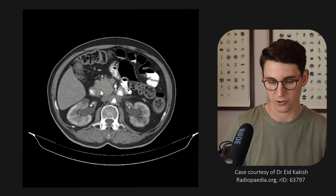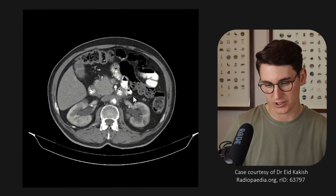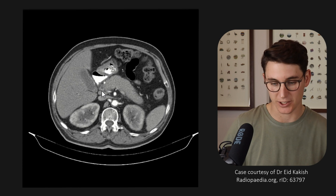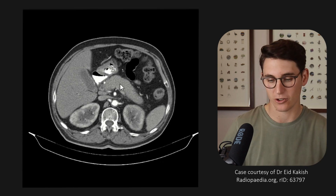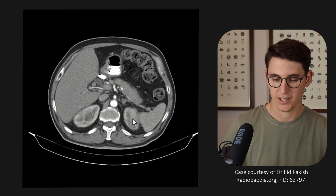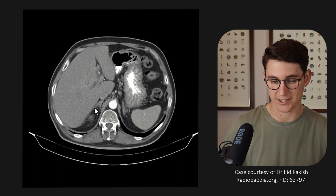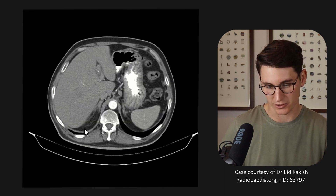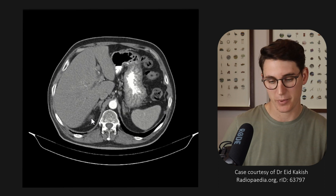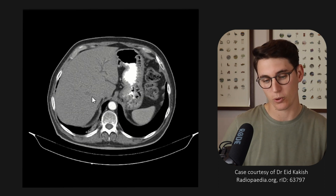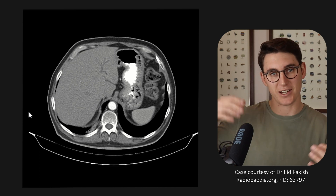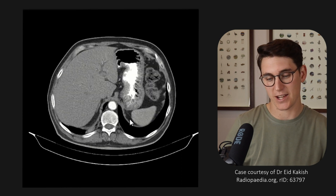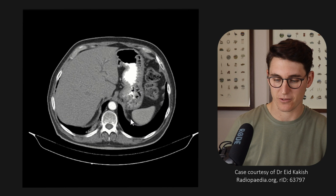We can see that anterior to Gerota's fascia will be our anterior pararenal space that has our duodenum, our descending and ascending colon, as well as our pancreas. As we head up superiorly, we can see our adrenal glands still within our perirenal space, and we can see our posterior pararenal space closing out here. The right-hand perirenal space will eventually come to the bare area of the liver, which doesn't have any parietal peritoneum and comes in direct contact with the right diaphragm. On the left-hand side, that left perirenal space opens up to the left diaphragm.